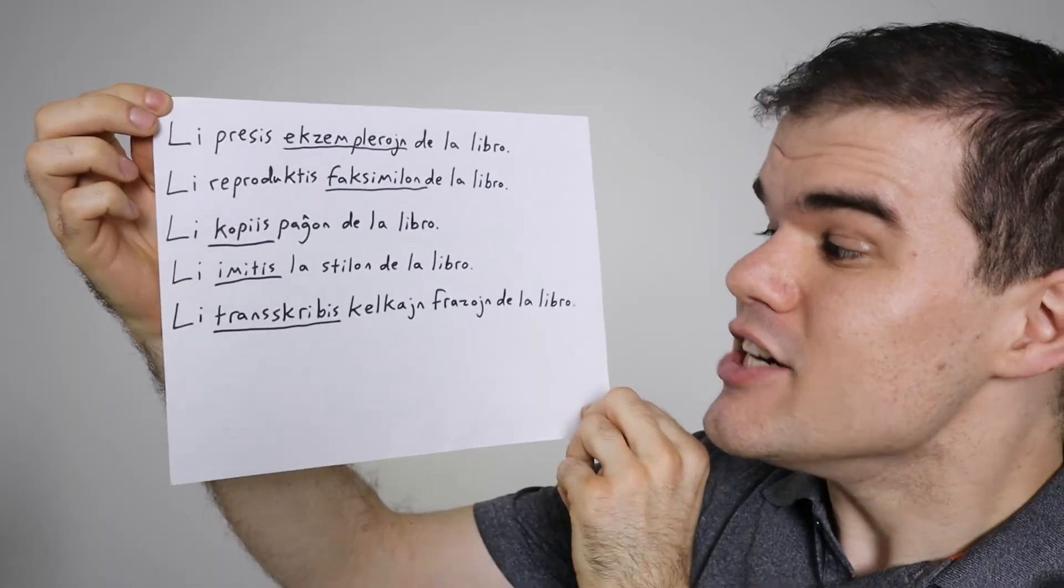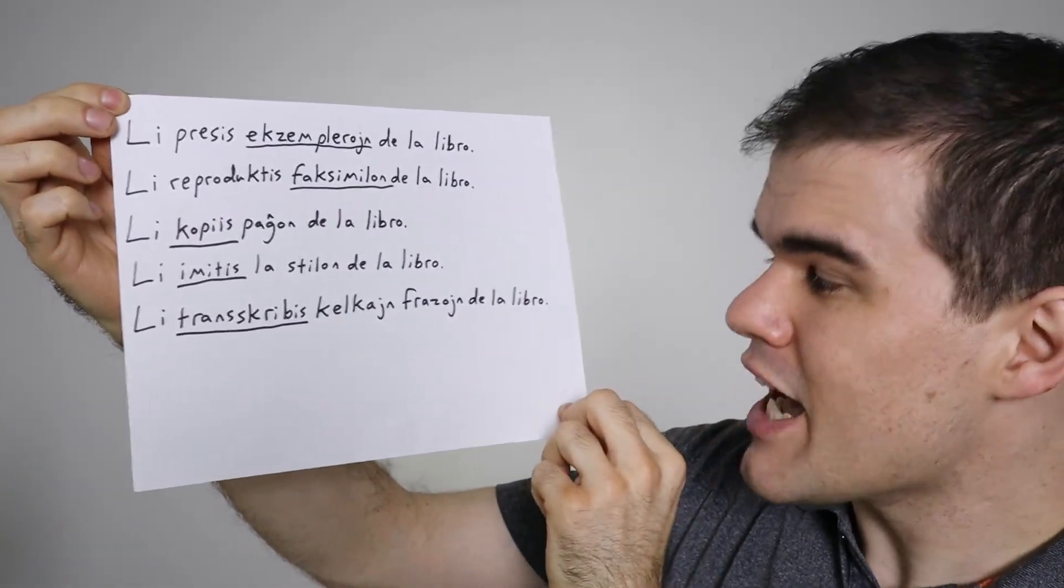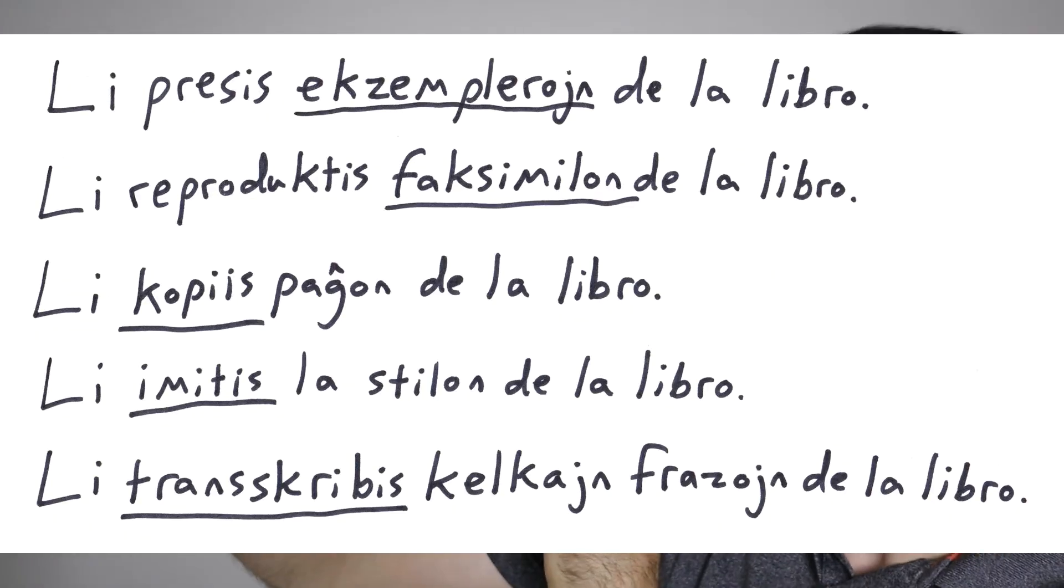Or did he imitate the style lovingly, honoringly, homagingly, not in some sort of sneaky way or a mean spirited way? What would that be? Oh, well, I'm itching for the past work of that author. It's a pasticcio. So, those are ways he could imitate the style. Finally, li transcribis kelk ein phrasoin della libro. He transcribed several sentences from the book or of the book. He jotted down or copied down several sentences there. He didn't make a photocopy. He actually handwrittenly wrote down some sentences that really stood out to him while he was reading the book.